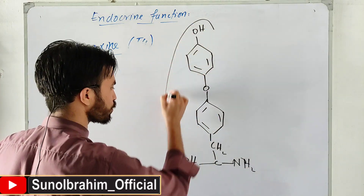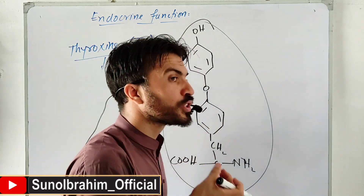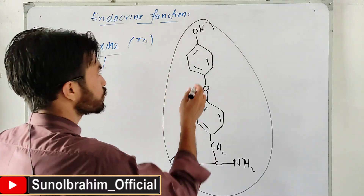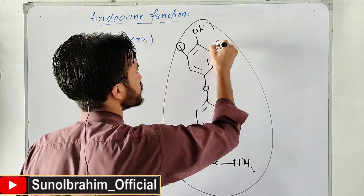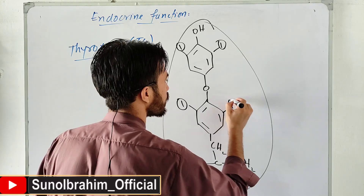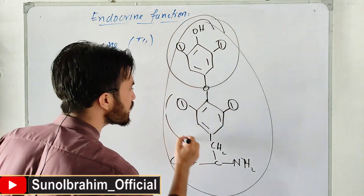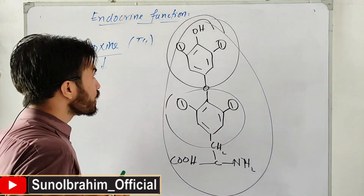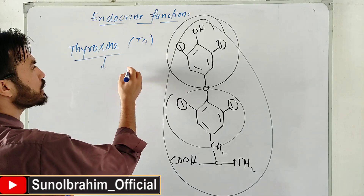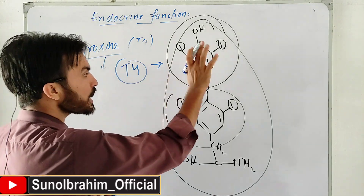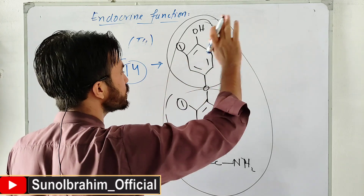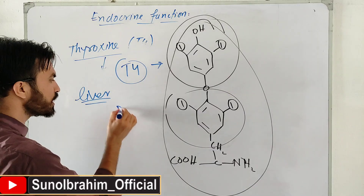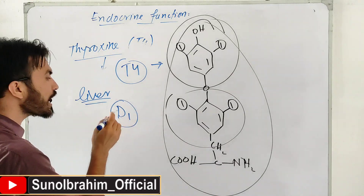Iodine is attached at specific positions on the molecule. The molecule has an outer ring and an inner ring - the iodine position is very important. T4 (with four iodines) is processed in the liver - D1 enzyme removes one iodine from the outer ring to activate the hormone.